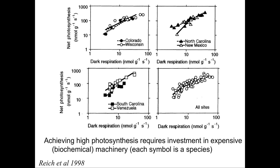This set of graphs looks across many species in many different types of forests, from the tropics shown in Venezuela squares to temperate Wisconsin. Each point here is a different tree species. What you can see is that high photosynthetic rates are associated with high dark respiration rates. When you have high photosynthetic rates, you have to invest in expensive biochemical machinery — expensive from a metabolic perspective — so you have to maintain all of those biochemical characteristics, and to do that you have to have a high respiration rate.